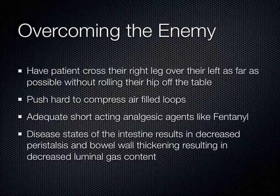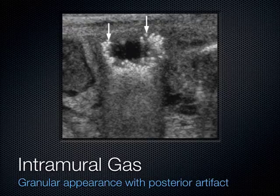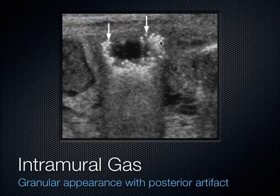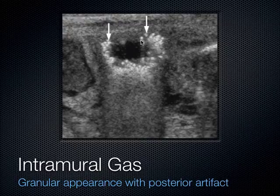This is what it looks like when you have air in the wall of the bowel — a very sick bowel. This is what necrotizing enterocolitis looks like: you get intramural air appearing as little punctate areas. Sometimes we see comet tails — a reverberation artifact that goes toward the bottom of the screen. You see that with air, and sometimes metal, but air classically causes these comet tails.